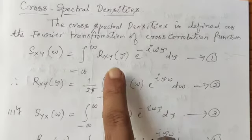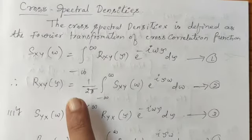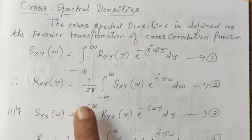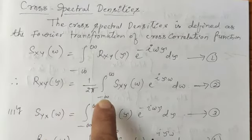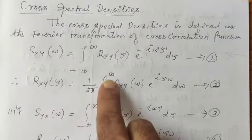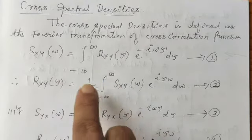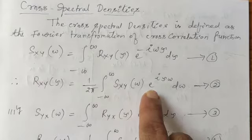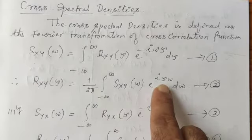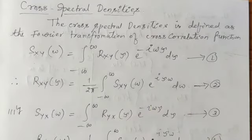We can find Rxy of tau using the inverse Fourier transformation. Rxy of tau is equal to 1 over 2π times the integral from minus infinity to plus infinity of Sxy of omega times e^(i·omega·tau) d·omega.